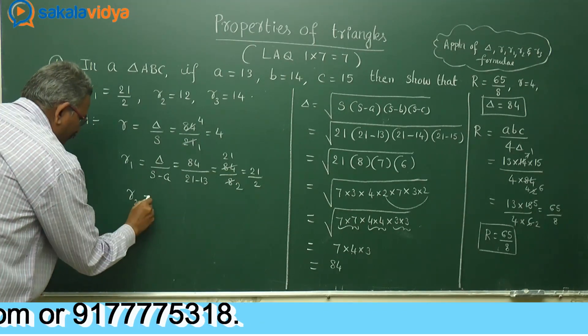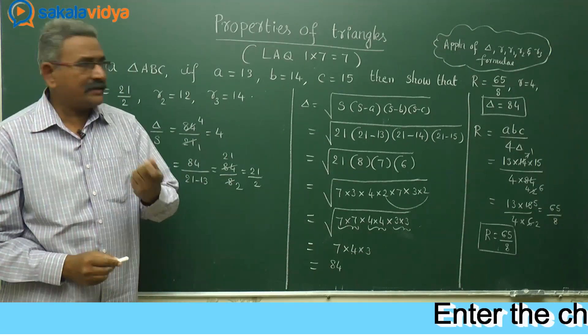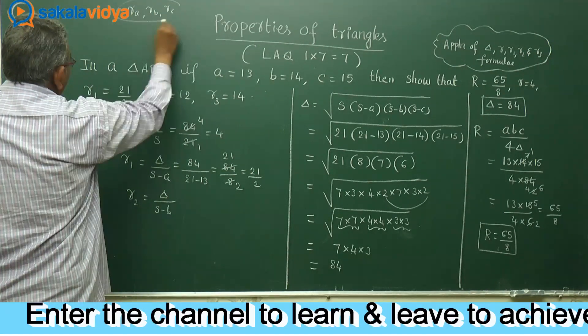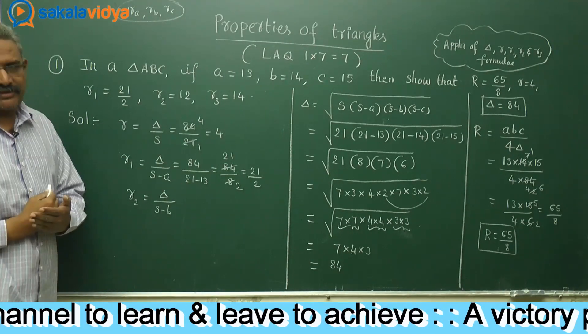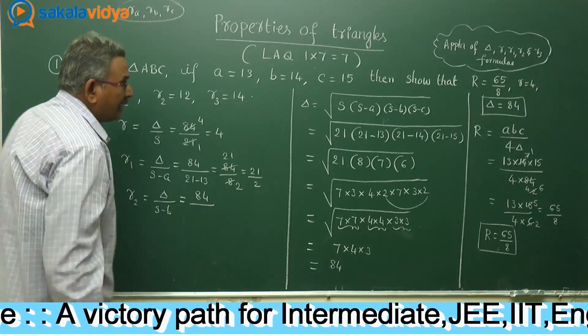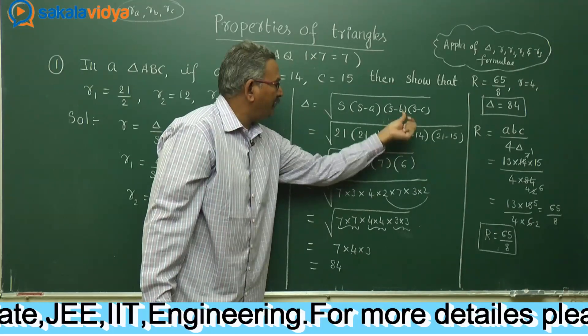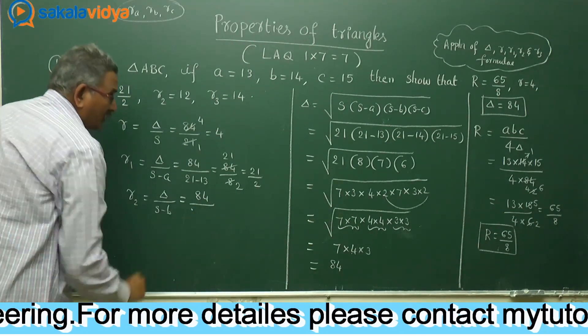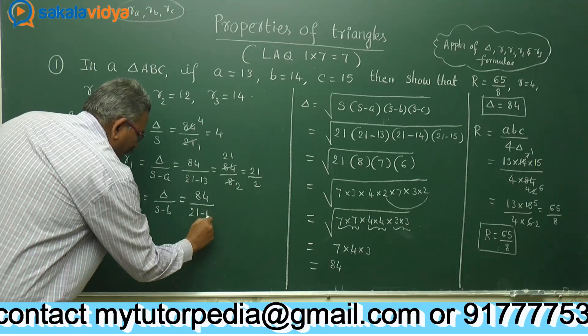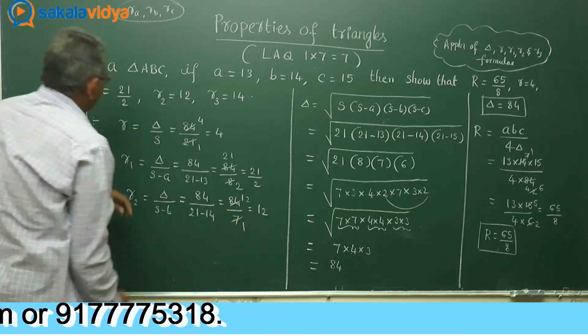Now we need to find out R2. R2 stands for delta by S minus B. In some foreign textbooks, R1 may be written as RA also. R2, RB, RC. Do not get confusion. In general, we can use R1, R2, R3 notation. This equals delta is 84, S minus B. S minus B corresponds to 21 minus 14 because S is 21, B is 14. 84 by 7, 7, 1, 7, 12. Check it. R2 is 12.